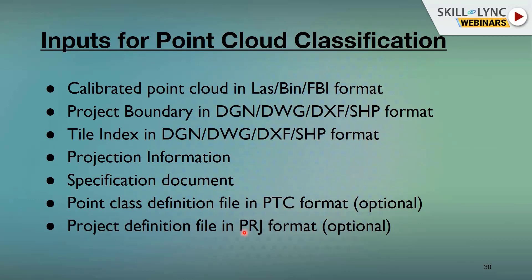The PDC file stores different class definitions — for example, class one for buildings, class two for vegetation, class three for power lines. Opening this file will directly classify the data into the defined format. The PRJ project definitions file can also be easily generated using TerraSolid products.